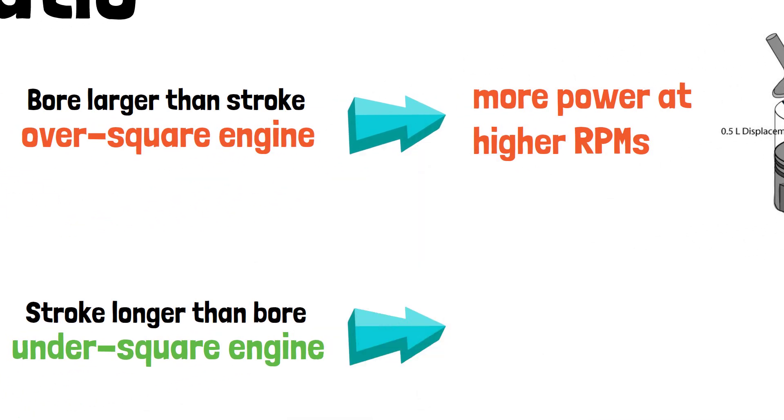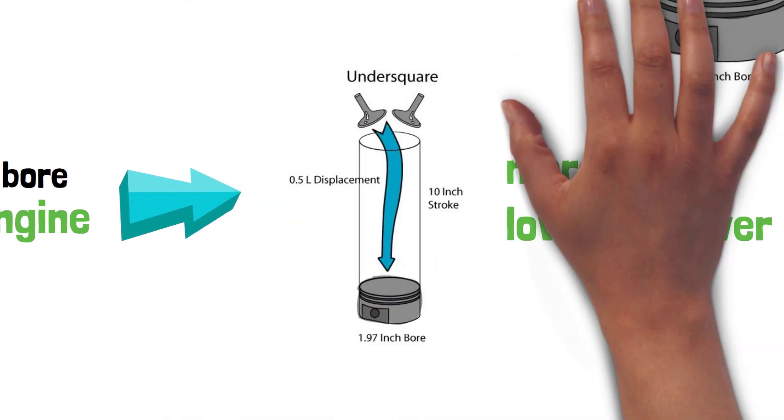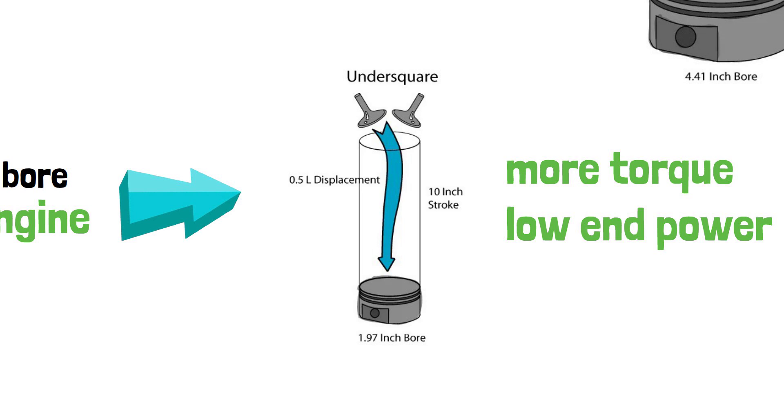Meanwhile, under-square engines with their longer stroke generally produce more torque, offering better low-end power and smoother acceleration.